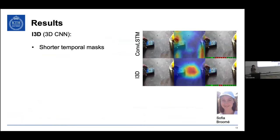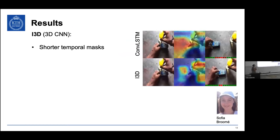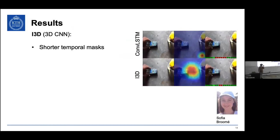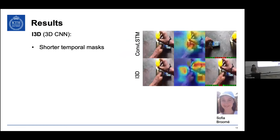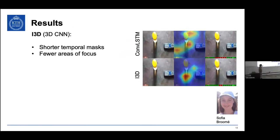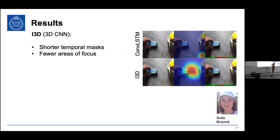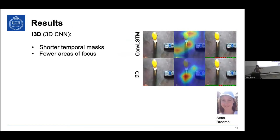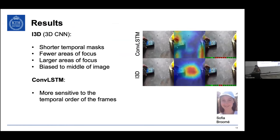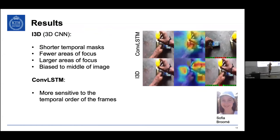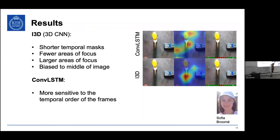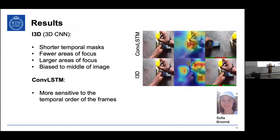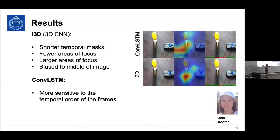The result was that i3D performed a bit better on this dataset, but it used a much shorter portion of the sequence to make inferences and also had fewer areas of focus — it mostly looked in the middle of the image. Whereas the ConvLSTM looked more around, followed the objects, and used a larger portion of the sequence. This dataset is designed to be object-agnostic — videos of a toy being put on top of another toy, crowdsourced, very diverse in appearance, but the motion is indicative of what is happening.